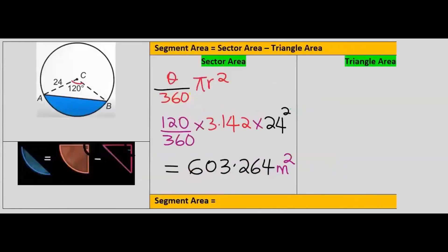In step number two, we choose the right formula. And in step number three, we are going to write out the formula and substitute. Which is the area of the sector, which is 603.264 meters squared.